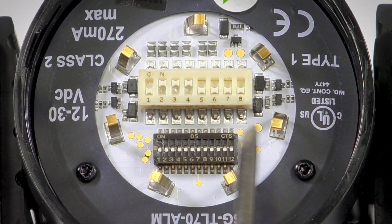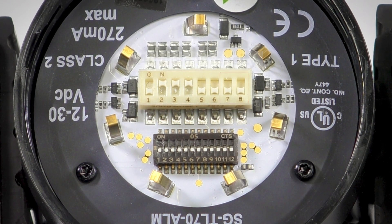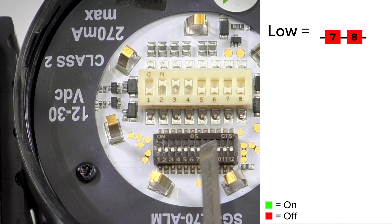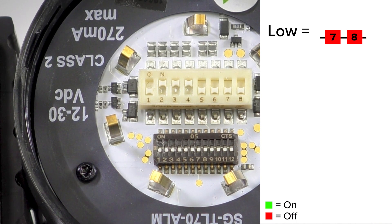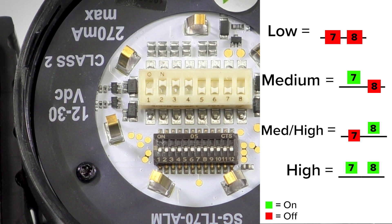Switches seven and eight are available to control audible intensity. For the purpose of our video, we'll leave them both off for the lowest intensity level. We have the option to go to medium, medium high, or high intensity by changing the positions of seven and eight.